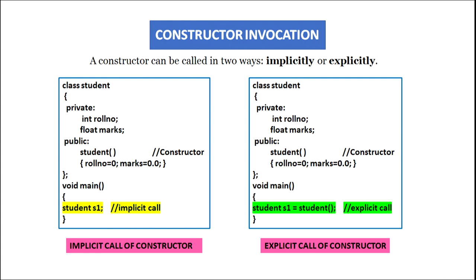Constructor invocation: a constructor can be called in two ways — implicitly or explicitly. Taking the example of class student with private data members roll number and marks, in the public section we declare the constructor with the name student, same as the class, and assign initial values to the data members. In void main, when we give the statement 'student s1', object s1 of class student will be created and at that time the constructor will be called automatically. Since we are not calling the constructor explicitly, this is the implicit call of constructor.